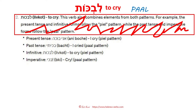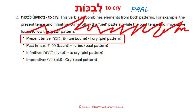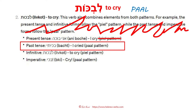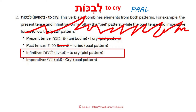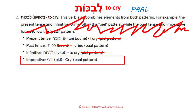What else does it say? Present tense: ani boche, yes, I cry — piel? Honey, we are in paal. How can that be piel? Past tense: bachiti, yes, I cried, paal — but the transliteration is off. Infinitive: livkot, yes — piel? No. Imperative: it says bechi, cry — paal. Let me correct that. Also this is the female version of the imperative — you cannot present the male one time, female the next, and plural the third. Either stick to one or say what it is, and ChatGPT doesn't. The imperative should be bchi for the male version, and if you want the female version, it is bechi.